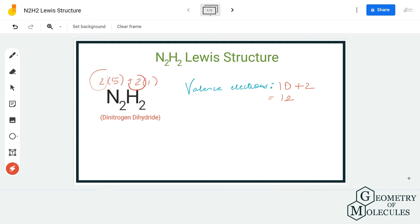We are multiplying both these numbers by two because there are two atoms of each nitrogen and hydrogen. Once you know the number of valence electrons, start placing the atoms to form a structure. Here, both the nitrogen atoms will take the central position and the hydrogen atoms will be placed on the terminals.